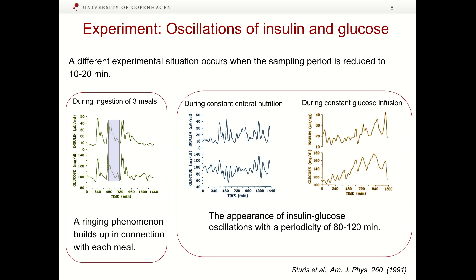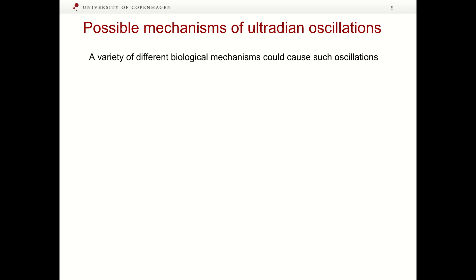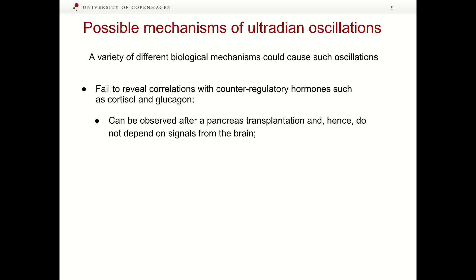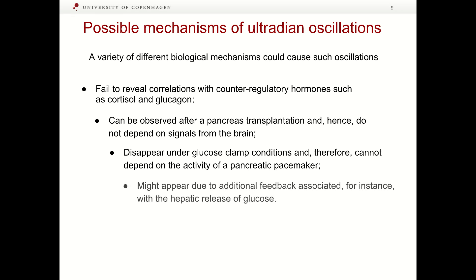Another series of experiments was performed during constant internal nutrition and during constant glucose infusion. One can detect oscillations with a period of 80-120 minutes. Different biological mechanisms could cause such oscillations. Additional experiments showed that oscillations fail to reveal correlations with counter-regulatory hormones such as cortisol and glucagon. Oscillations can be observed after a pancreas transplantation and therefore do not depend on signals from the brain. Oscillations disappear under glucose clamp conditions and therefore do not depend on the activity of pancreatic beta cells. Oscillations might appear due to additional feedback associated, for instance, with the hepatic release of glucose.